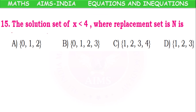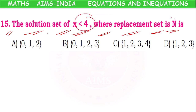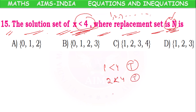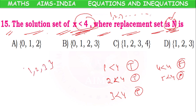The solution set of x < 4 where the replacement set is N (natural numbers): x values are taken from {1, 2, 3, ...}. Checking: 1 < 4 — true; 2 < 4 — true; 3 < 4 — true; 4 < 4 — false; 5 < 4 — false. The inequality is satisfied only for values 1, 2, 3. So the solution set is {1, 2, 3}, and option D is the correct answer.